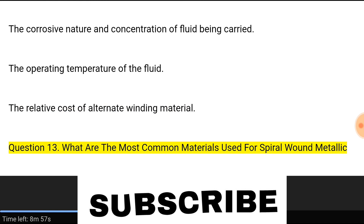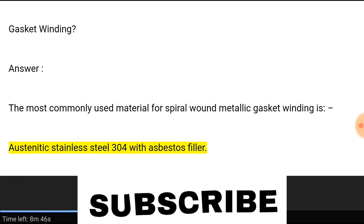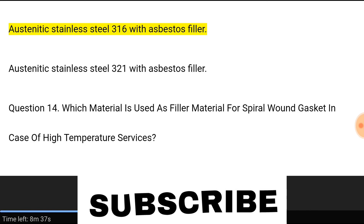Question 13: What are the most common materials used for spiral wound metallic gasket winding? Answer: The most commonly used materials for spiral wound metallic gasket winding are: austenitic stainless steel 304 with asbestos filler, austenitic stainless steel 316 with asbestos filler, and austenitic stainless steel 321 with asbestos filler.